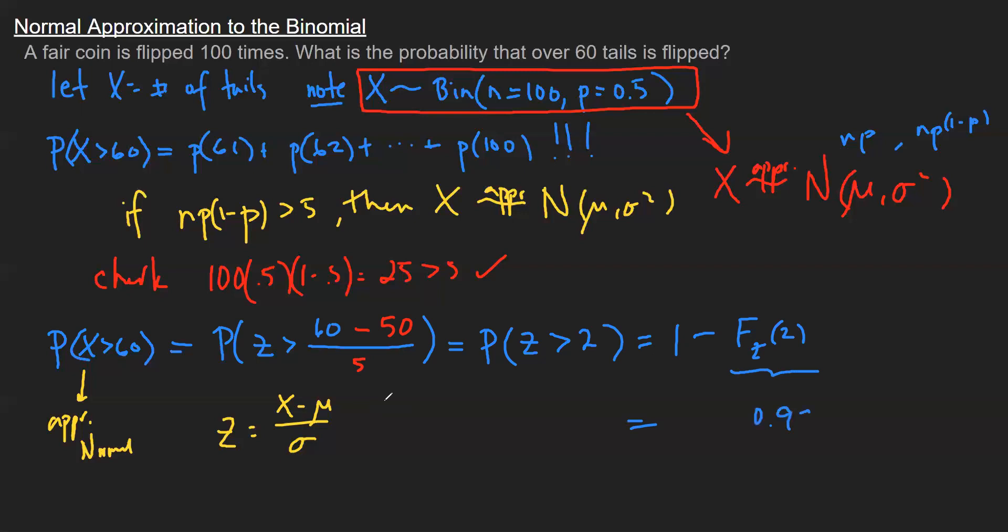And then I will just look this up on the table. And that's 0.9772. And so my final answer here is 0.0228. So not likely at all that you would be able to flip over 60 tails.